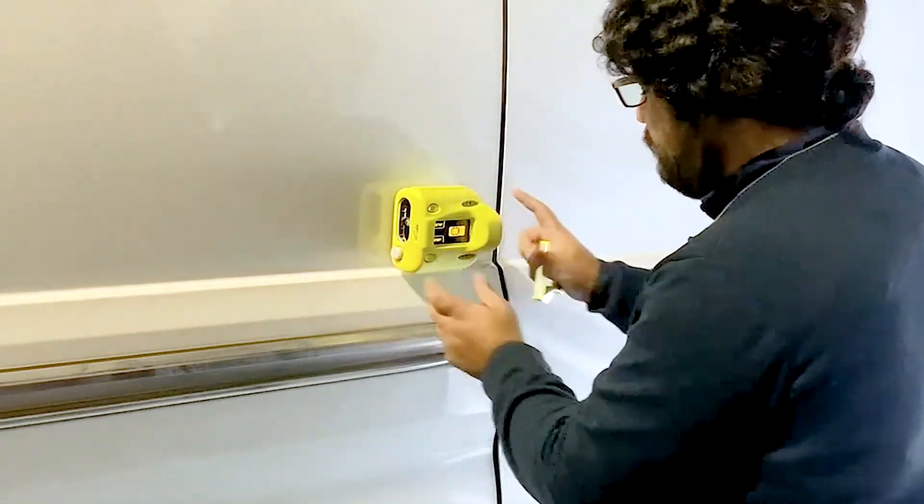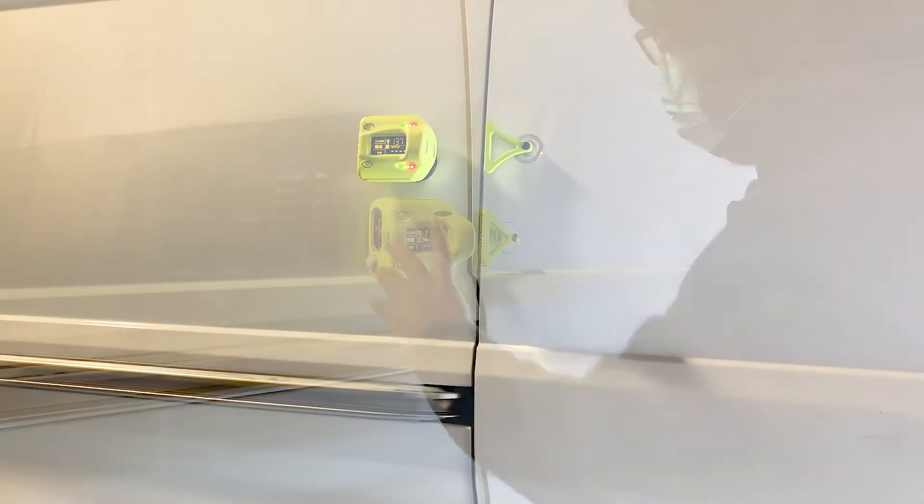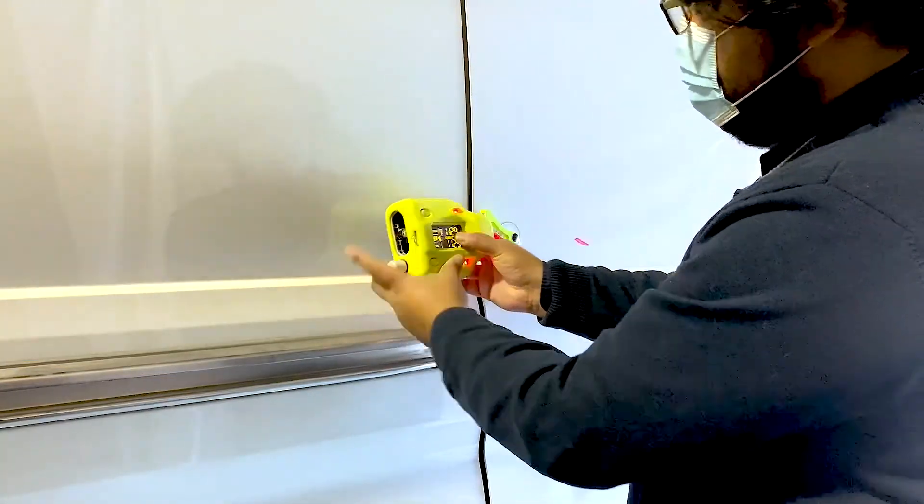One door measurement including handling, mounting, taking measurements, and removing the device takes about 20 seconds.